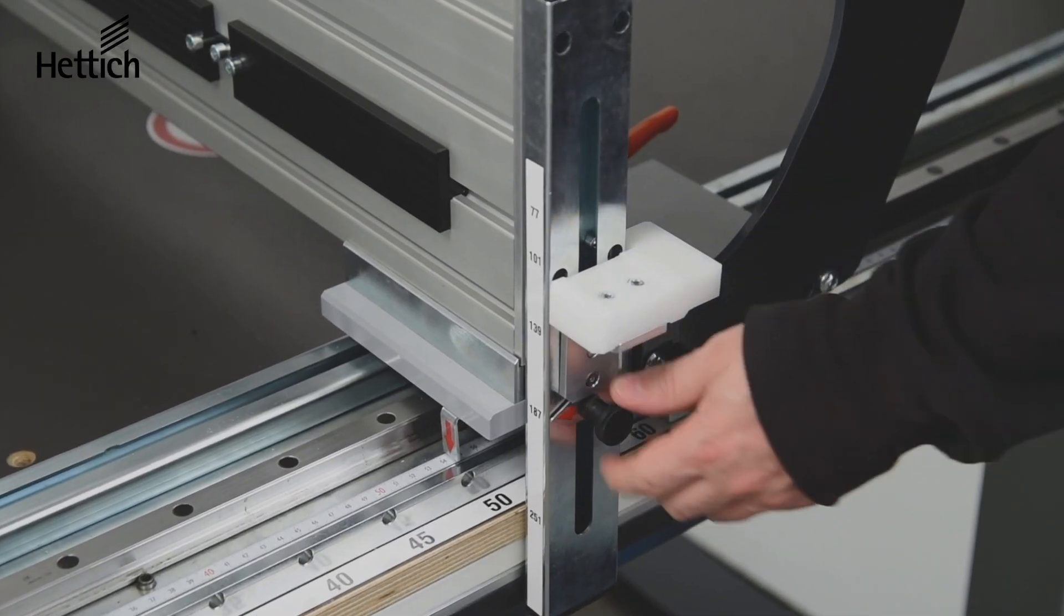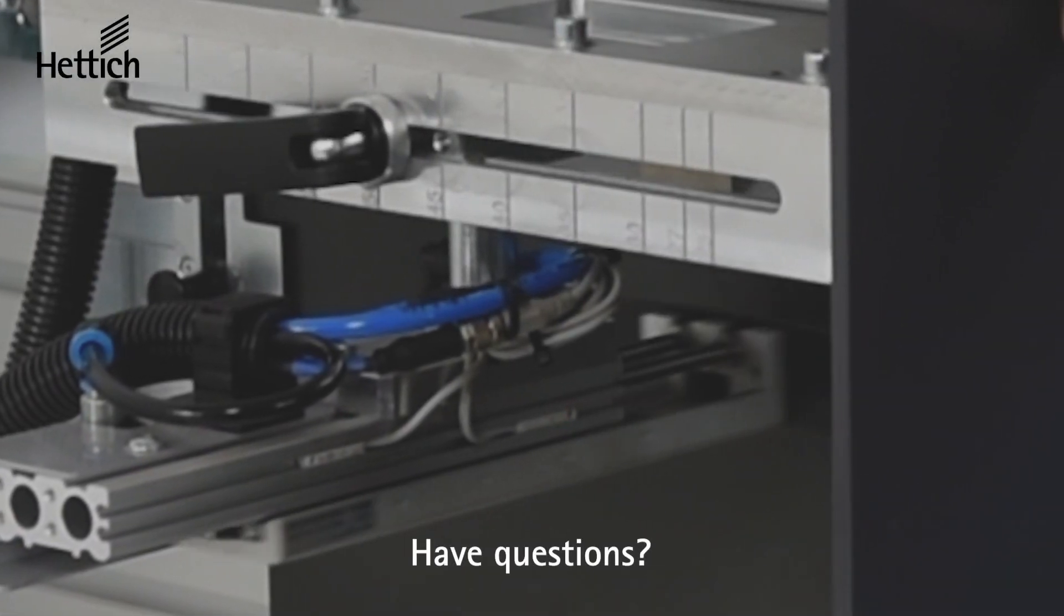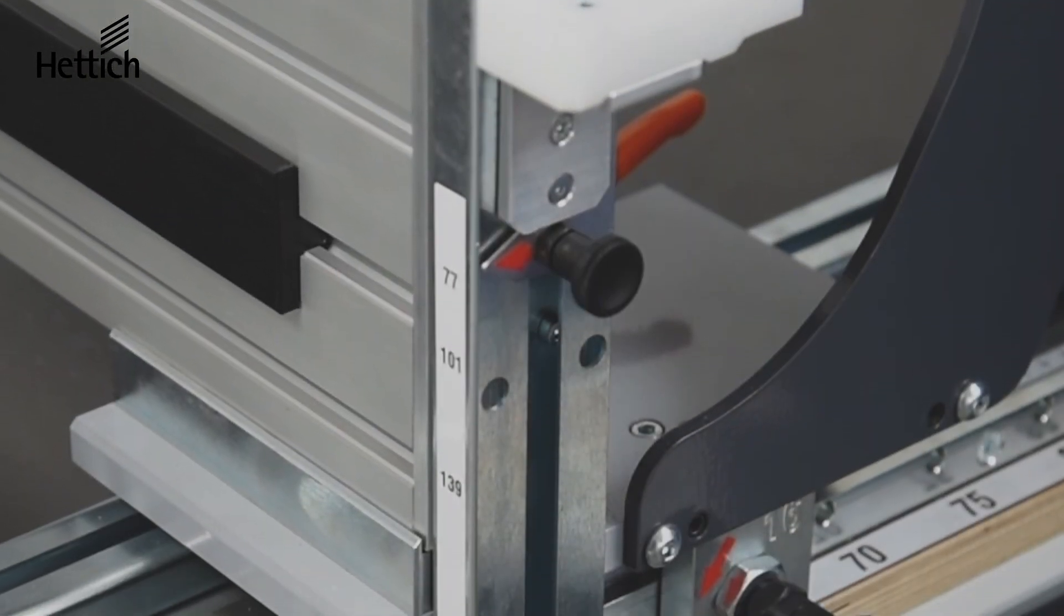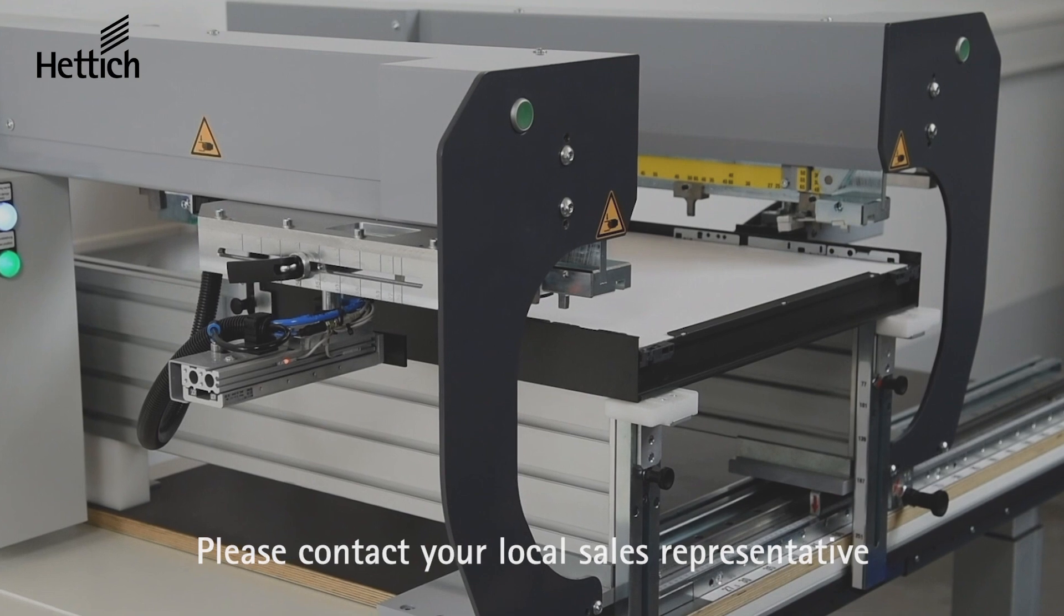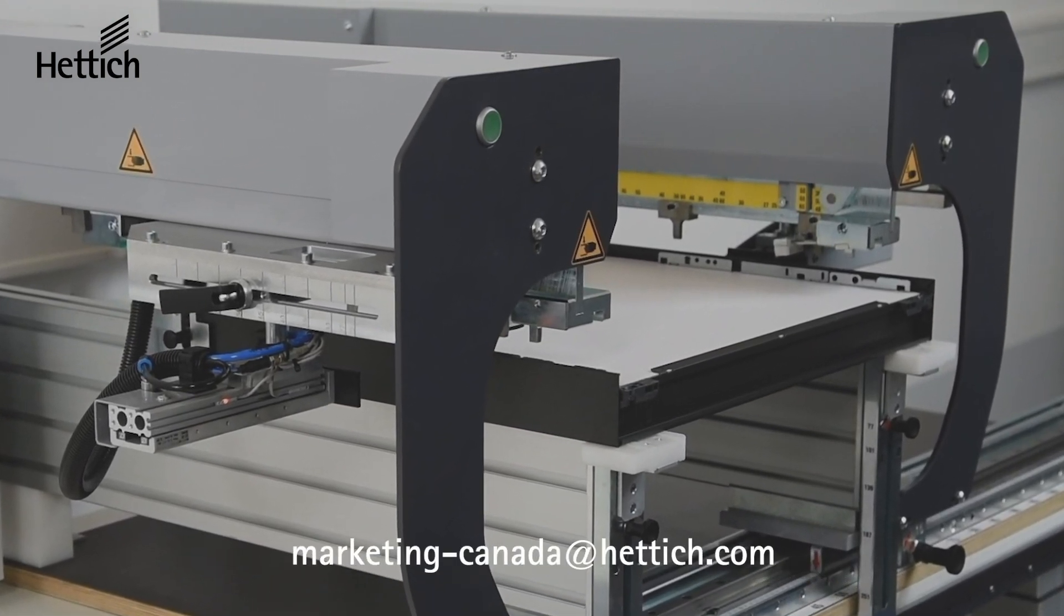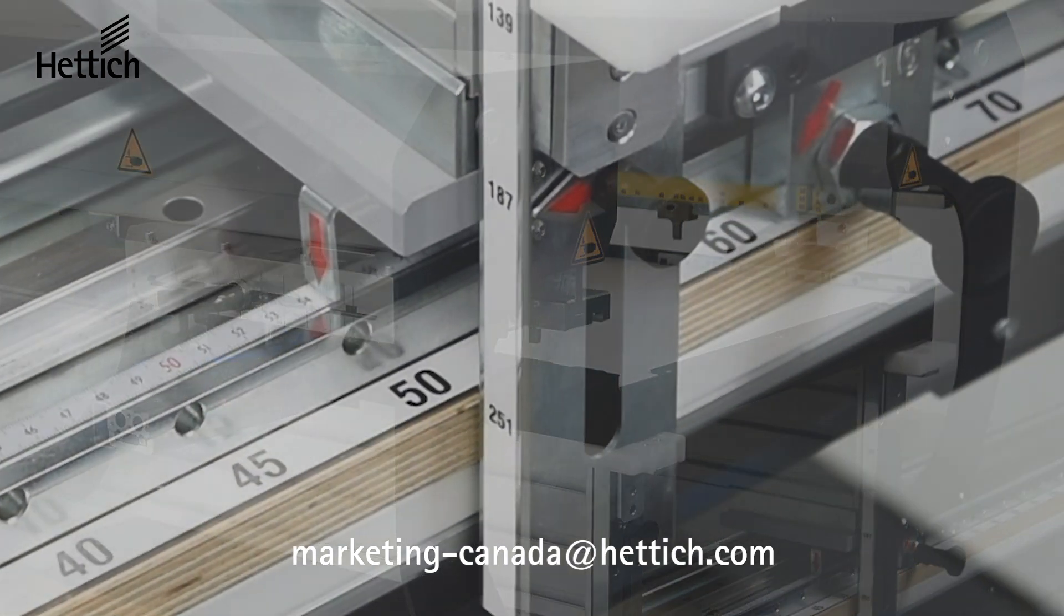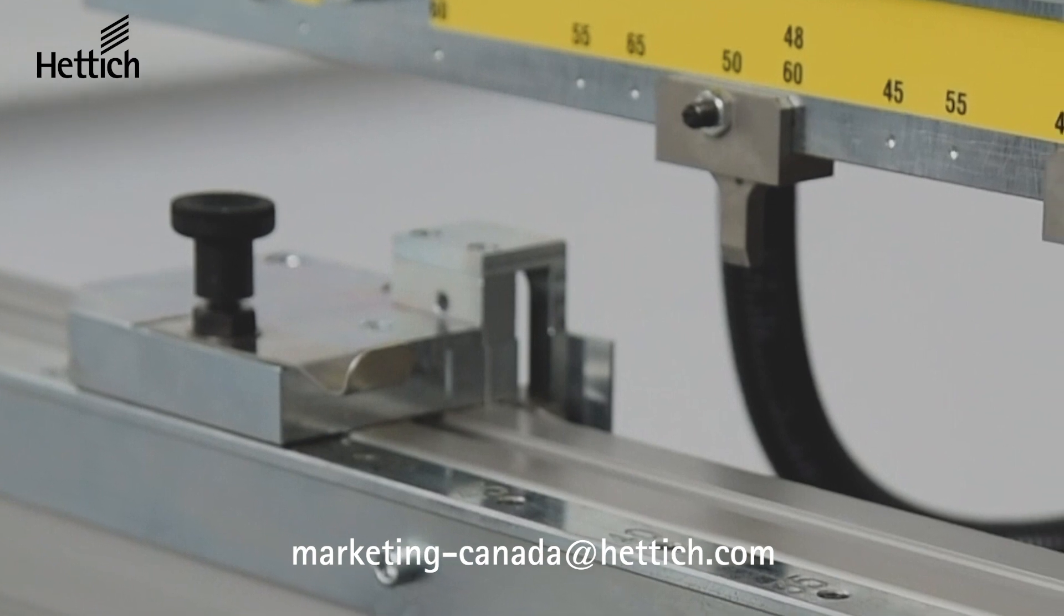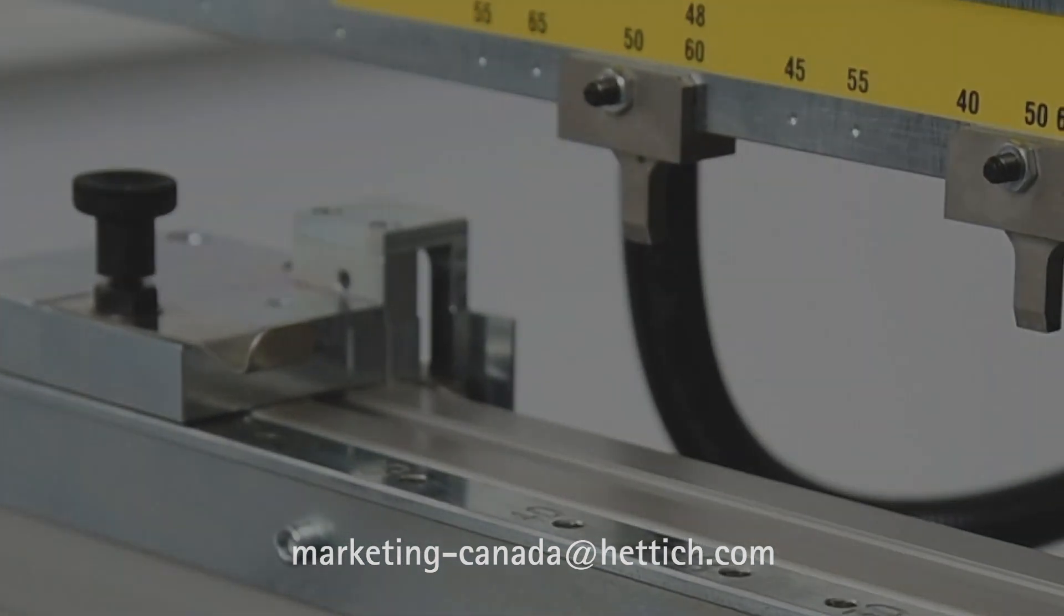As you can see, the AVENFIT 300 is a very versatile machine that will help speed up the assembly time of the Avantech U drawer system. If you have any questions or would like more information on the AVENFIT 300 or any other Hettich product, please contact your local Hettich sales representative or email us at marketing-canada@hettich.com. Thank you for your time and please join us again at the next Hettich product spotlight.